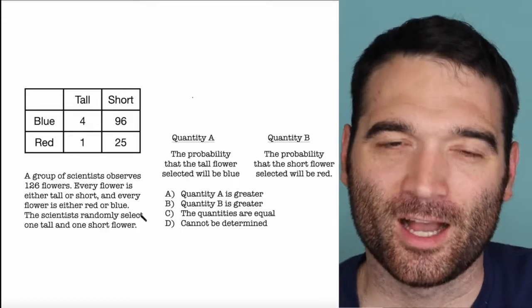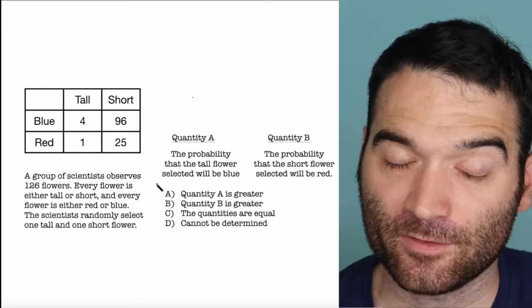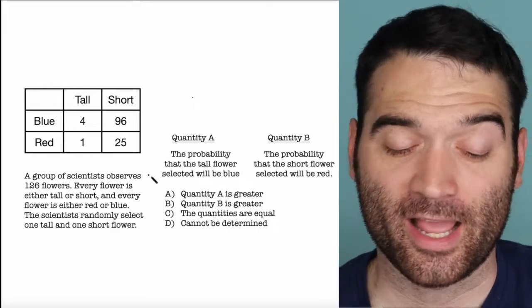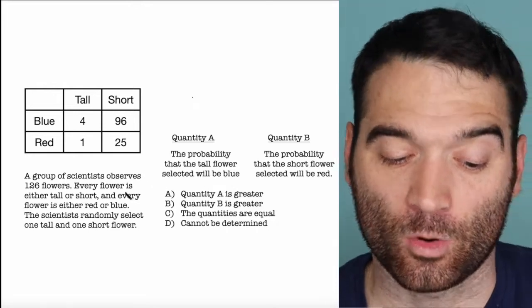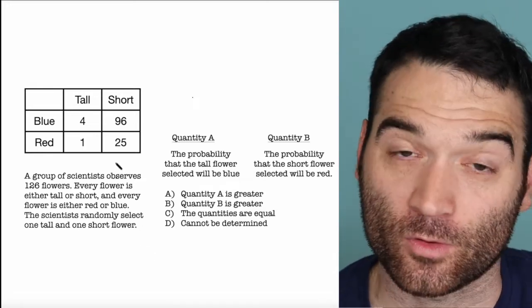Here's a good GRE question. A group of scientists observes 126 flowers. Every flower is either tall or short, and every flower is either red or blue. The scientists randomly select one tall and one short flower.